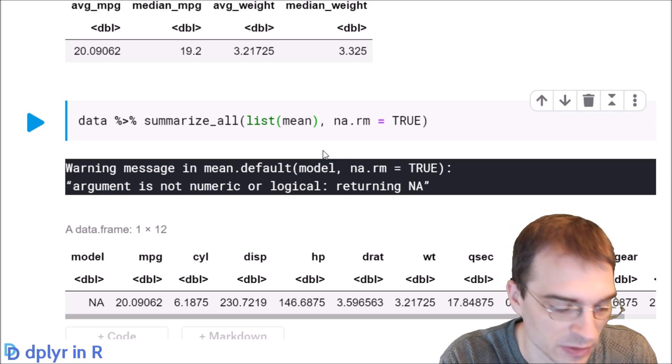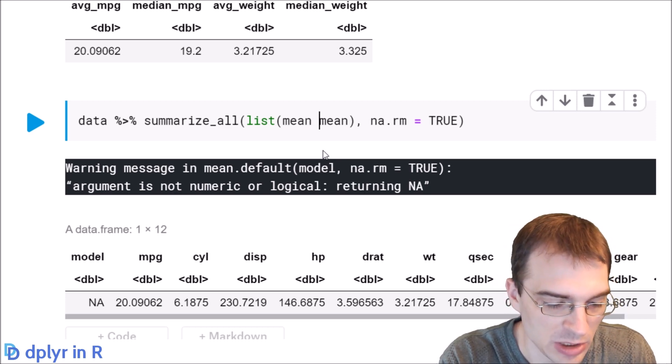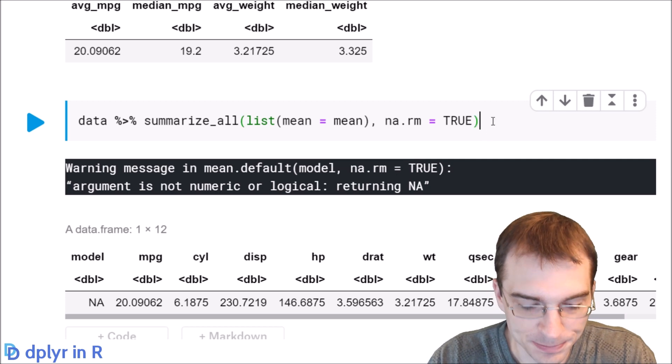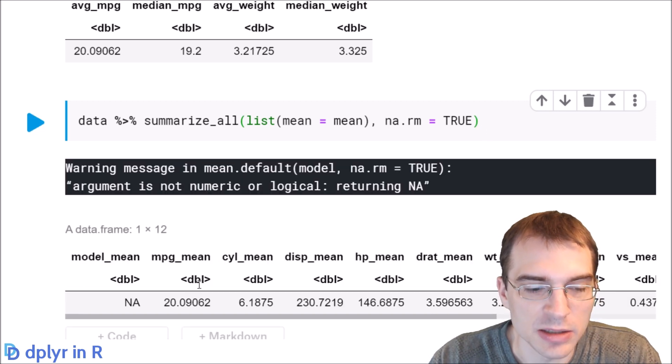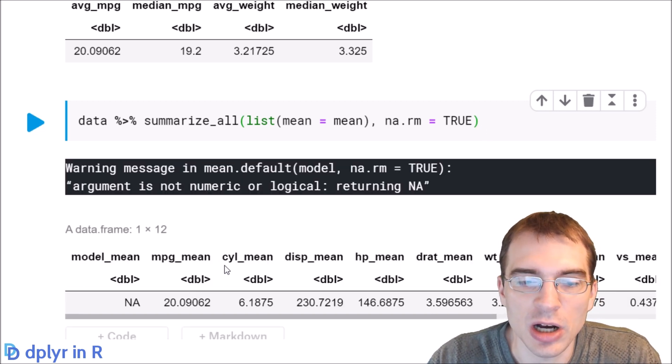So for instance, we could have said we wanted mean equals mean. And then when we run that, instead of just having the original column names, it's the original column names, but it also has this extra mean label that we attach to it.